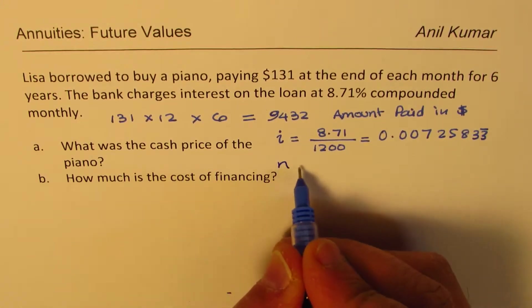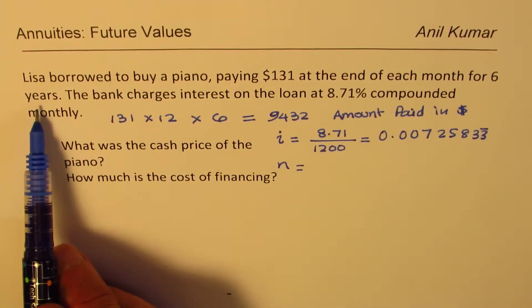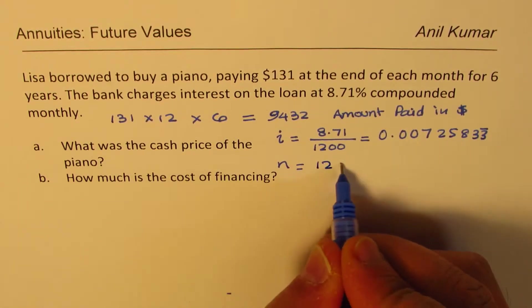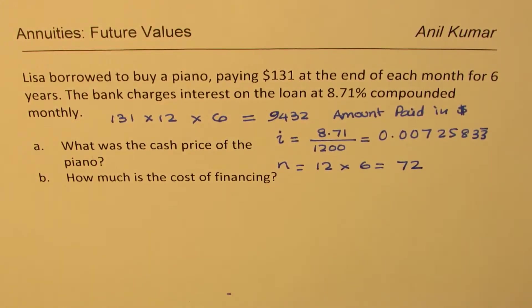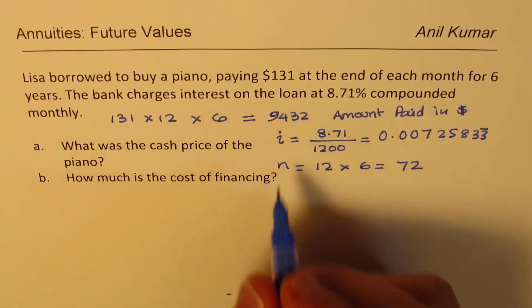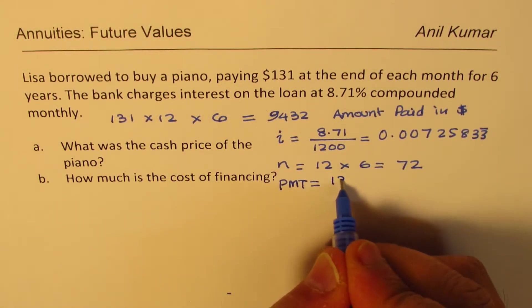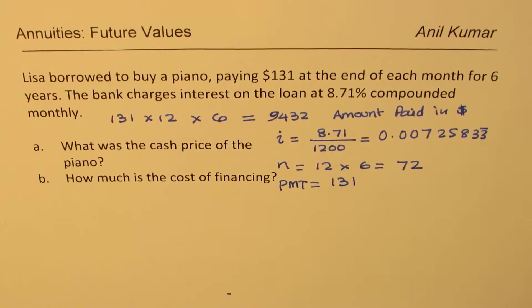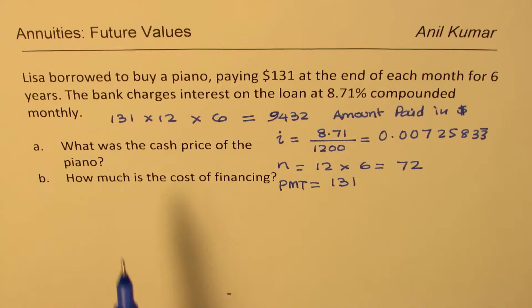N, the number of compounding periods are how many? So 6 years and monthly means 12 times 6, right? So that becomes 72. So the compounding periods are 72. The amount which every month she is paying, let's call this PMT, right? Per month amount is 131 dollars. What do we need to find? What was the cash price of the piano? That means we want to find the present value, correct?